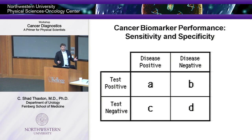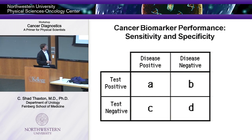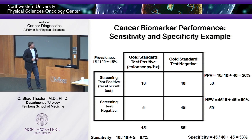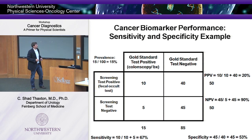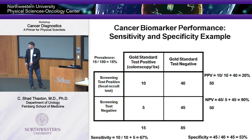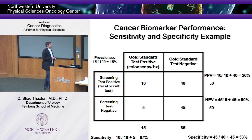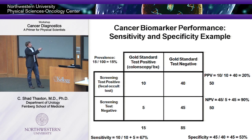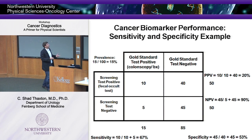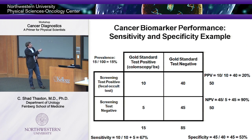Let's take colon cancer as an example. The gold standard way to diagnose colon cancer is to take a colonoscope, go up, visualize the lesion, take a biopsy, and send it to the pathology lab — giving more or less 100% diagnosis. We want to see whether screening patients for blood in their stool compares to this gold standard. Let's say colon cancer has a prevalence of 15% in a population — so 15 people out of 100 have colon cancer. We want to know how good our screening test is at identifying those patients without doing a colonoscopy.